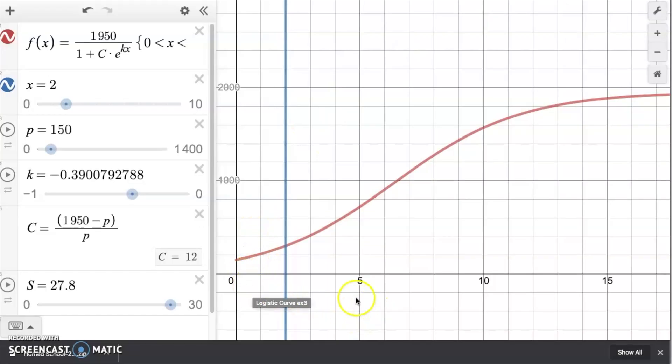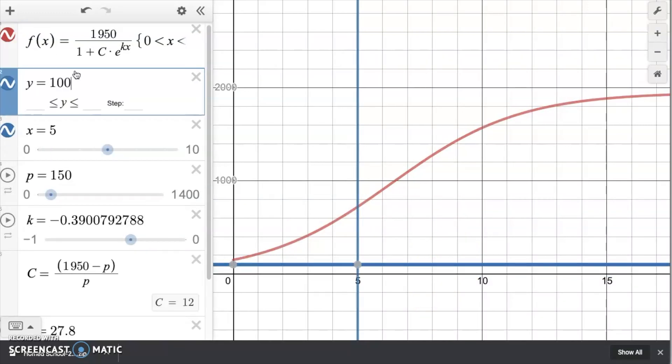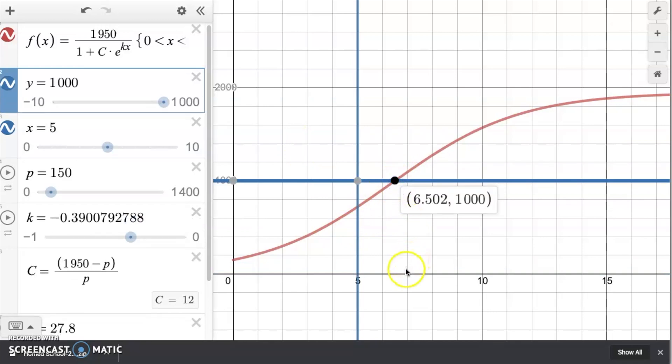So here's the actual solution curve here. You can see that this is that k that we got. That's that two years in. We're at 300. So here's that five year, 720. If I also take a look at the graph y equals 1000, then we'll see that that intersects right here at 6.502. And there's that six and a half years that we got before.